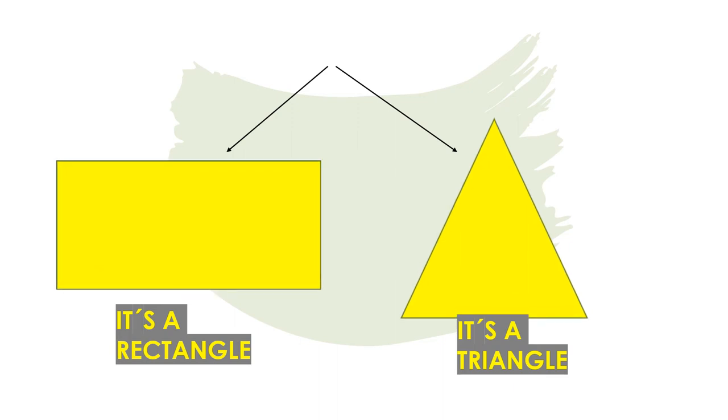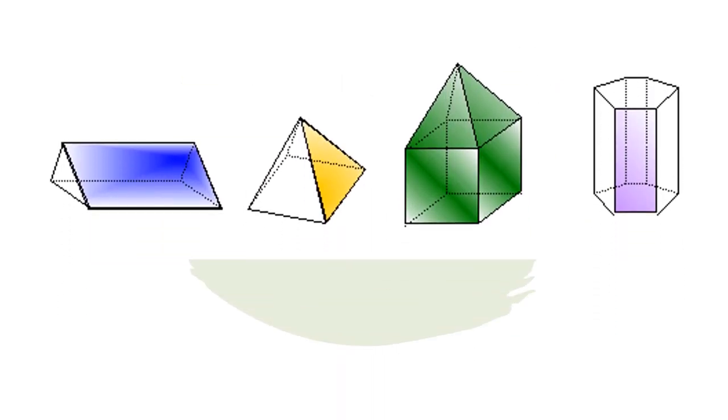The first one is a rectangle and the second one is a triangle. Tell me if you remember the name of these shapes. They start with the letter B.